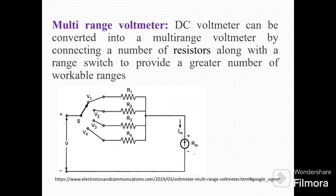Next device is multirange voltmeter. A DC voltmeter can be converted into a multirange voltmeter by using a number of resistors along with a range switch. R1, R2, R3, R4 are the resistances. Here is a selector switch. The voltmeter is connected here. Current is measured here. We can choose the proper workable range using this selector switch.